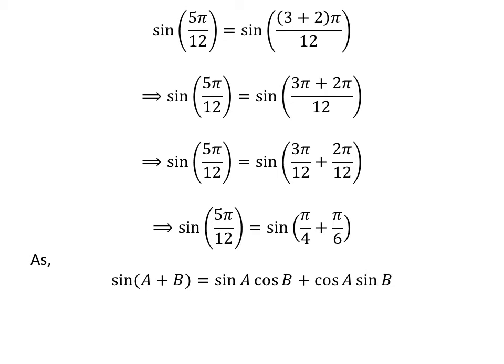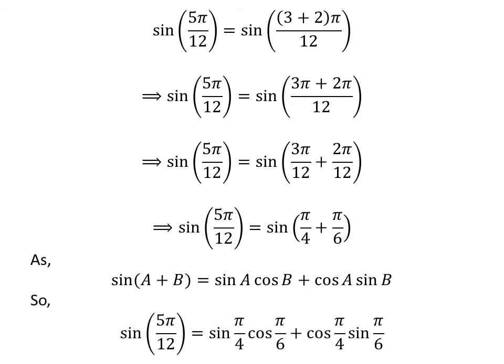We know the famous trigonometry identity: sine of a plus b is equal to sine of a times cosine of b plus cosine of a times sine of b. Applying this identity gives us sine of 5 times pi upon 12 is equal to sine of pi upon 4 times cosine of pi upon 6, plus cosine of pi upon 4 times sine of pi upon 6.